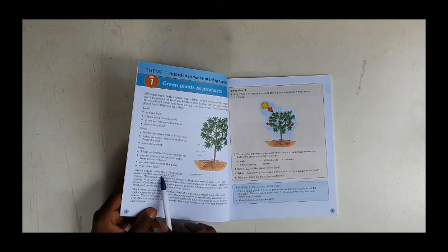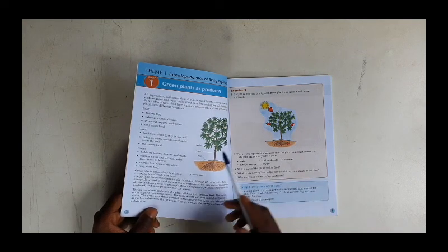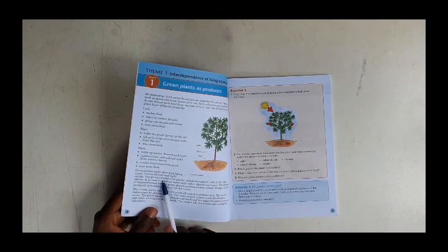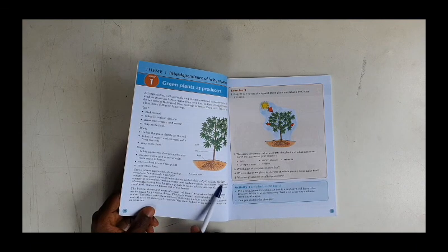Now green plants make their food using water, carbon dioxide, and light energy. I talked about chlorophyll. The green substance in the plant called chlorophyll collects the light energy.